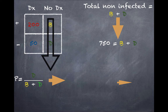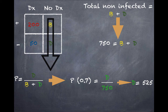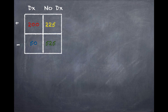So B plus D equals 750. Specificity is 70% or 0.7, so we set 0.7 equal to D divided by 750. Multiplying 0.7 by 750 gives us 525, so D equals 525. By default, B is whatever is left over to reach 750, which is 225. So D equals 525 and B equals 225. We now have all the values needed to calculate PPV and NPV.